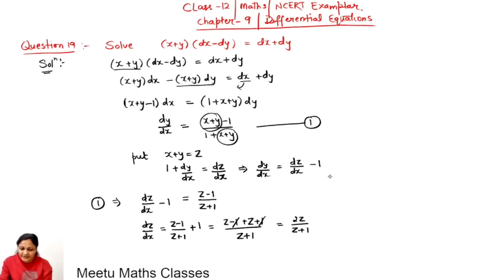Now this differential equation dz upon dx equals 2z upon z+1 is variable separable. So we can shift z+1 upon z with dz and we can shift dx here, and now integrating both sides.